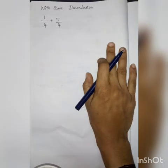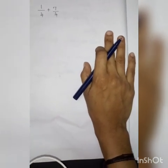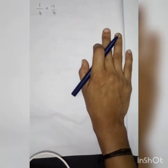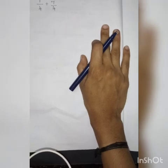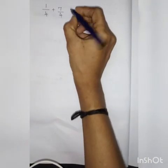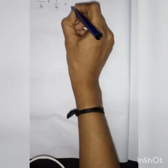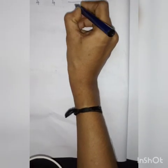Here, we are going to do the addition of two fractions with same denominators. I have taken 1 by 4 plus 7 by 4. What is the denominator here? 4. Both have the same denominator. So, what we have to do first is we have to take the denominator as common.